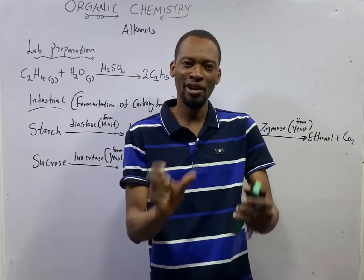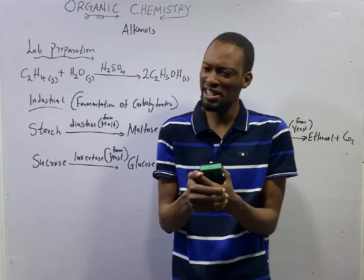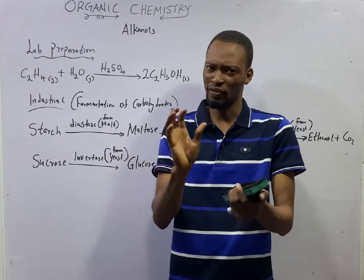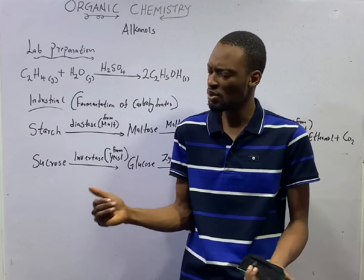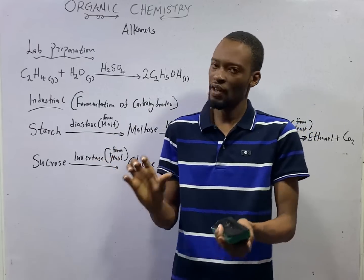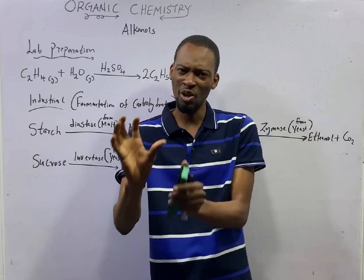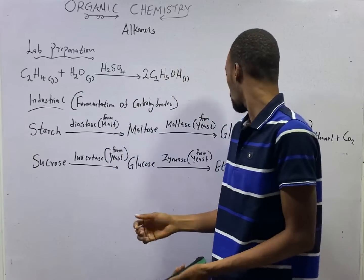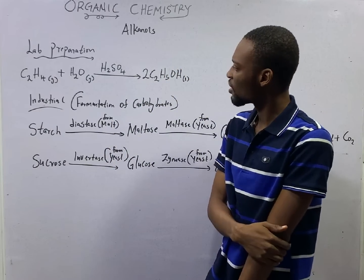This is episode 101 of the 120 days to JAM chemistry with Flash Isaac. In this episode, we shall be looking at the preparation of alkanols using ethanol as an example.